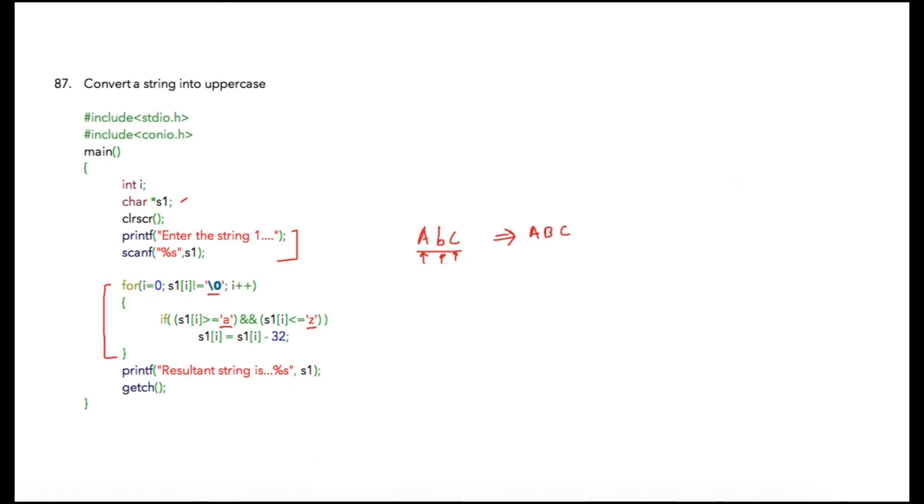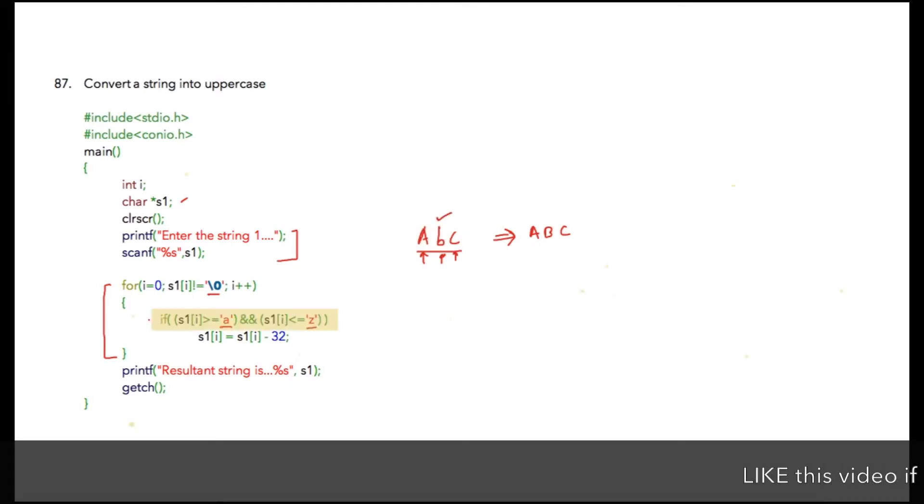We are going to check all the occurrences of small letters. In the second iteration this condition will be true, so what we need to do is subtract the value of the current character minus 32.